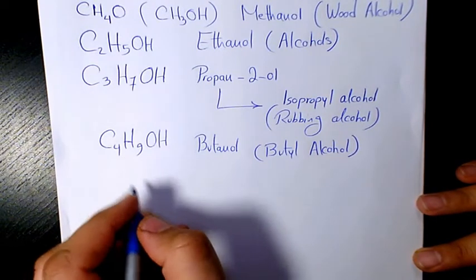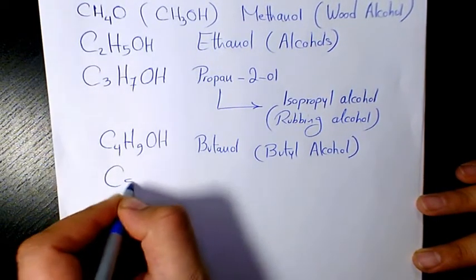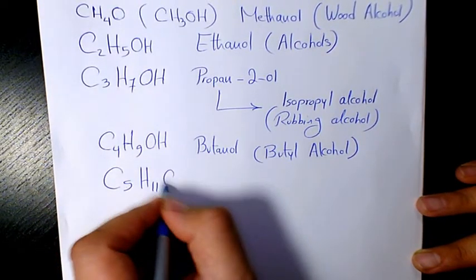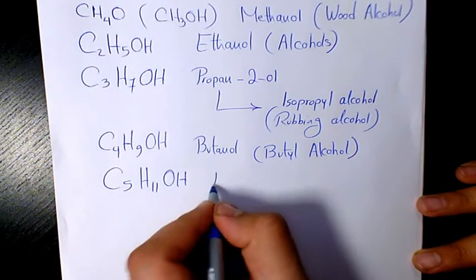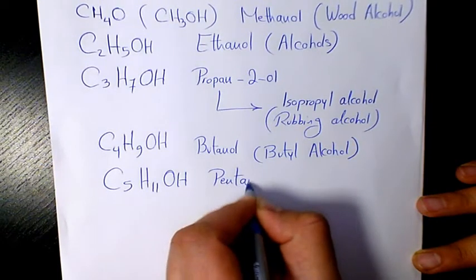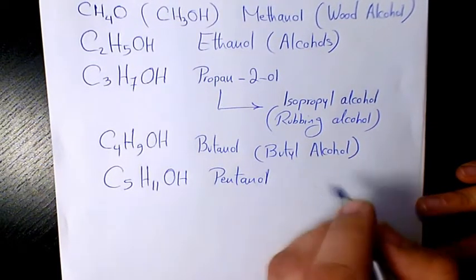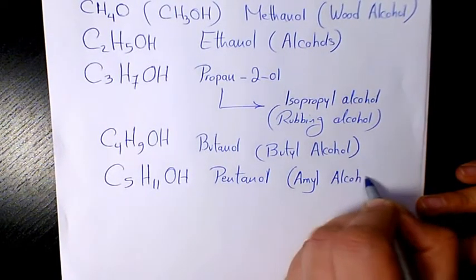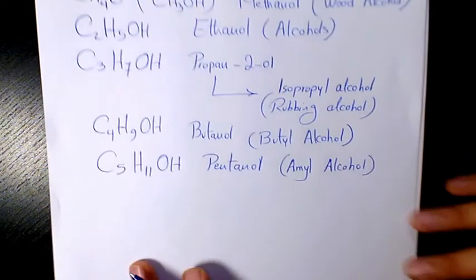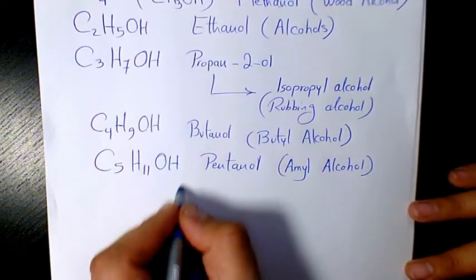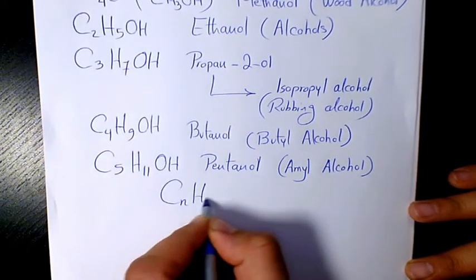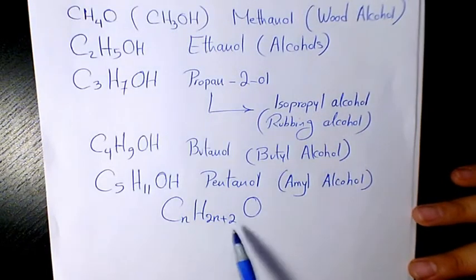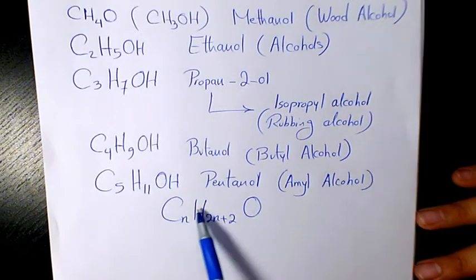Another example is pentanol, C5H11OH, sometimes called amyl alcohol. As you see here, the general formula for this group is CnH2n+2O. So we have one OH group, one oxygen, and the number of hydrogen is two times the number of carbon plus two.